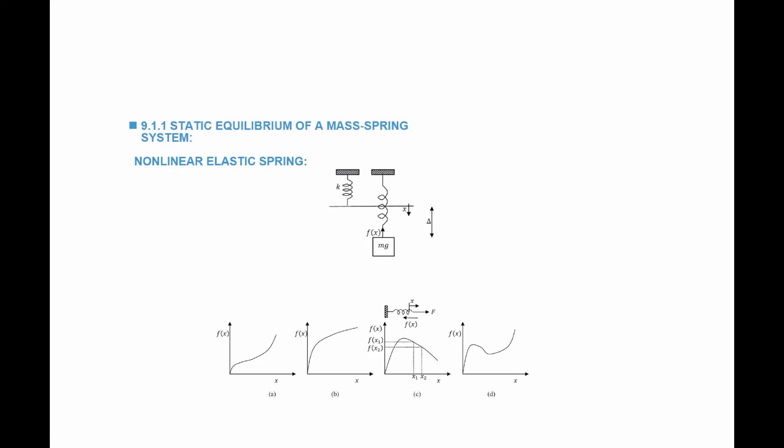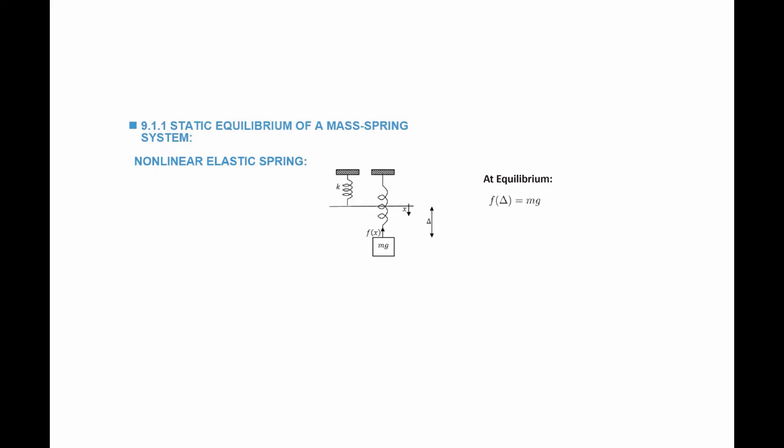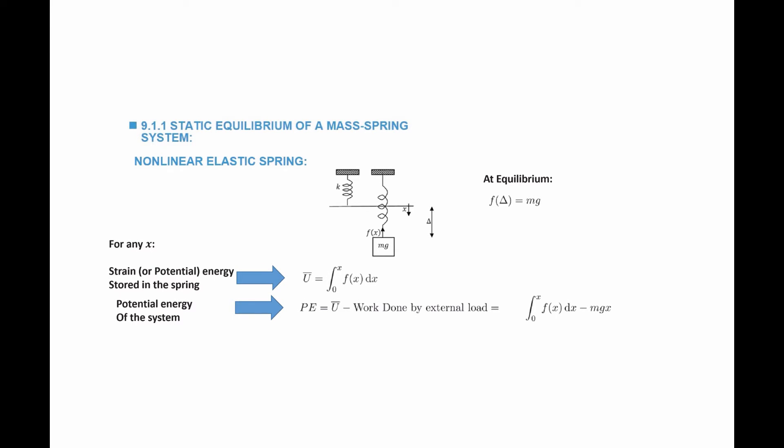This condition applies even for a non-linear elastic spring. If the relationship between force and displacement follows a non-linear curve — one of four curves shown here — equilibrium is obtained when the force in the spring as a function of delta equals mg, where delta is the displacement at equilibrium. We define the same two quantities: the strain energy stored in the spring is the integral of the force from zero to x dx, and the potential energy of the system equals this strain energy minus the work done by the external load mg, so potential energy equals this quantity.